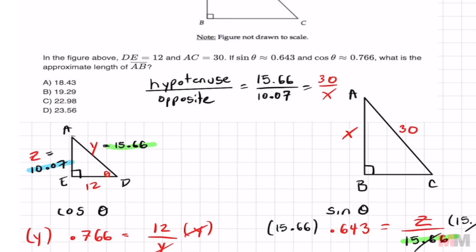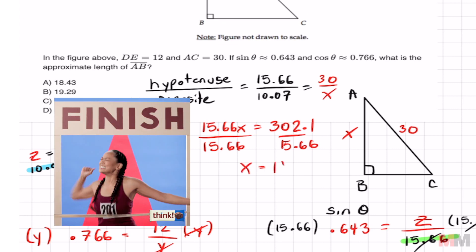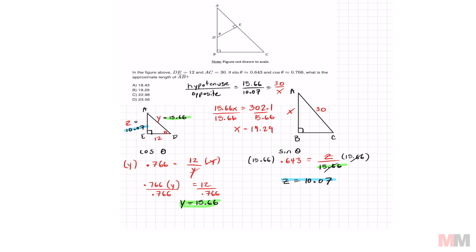We are almost there. All we got to do is cross multiply and solve. That's going to get me 15.66 X equals 302.1. And the final step, divide both sides by 15.66 and we get X is approximately 19.29. Letter choice B.